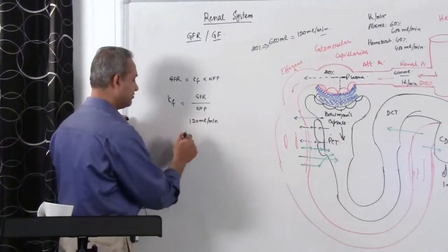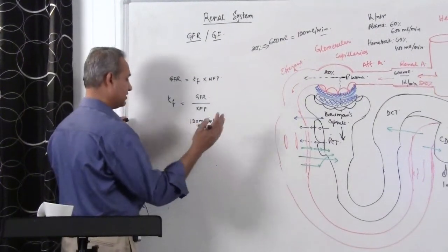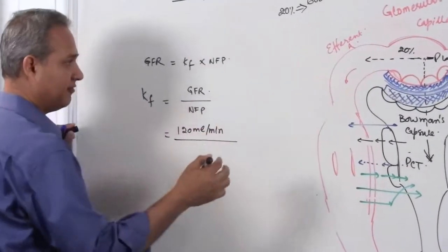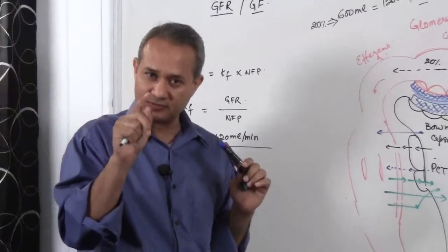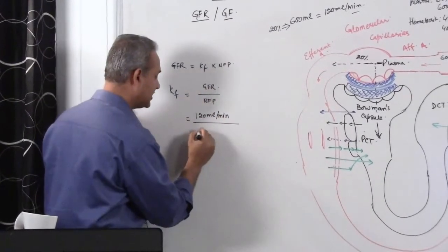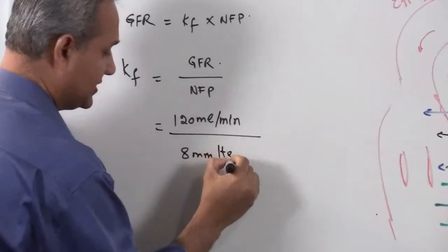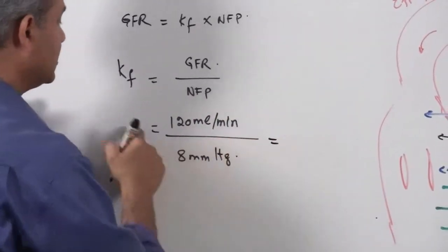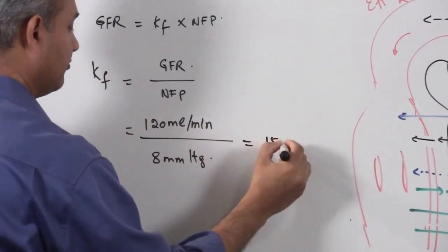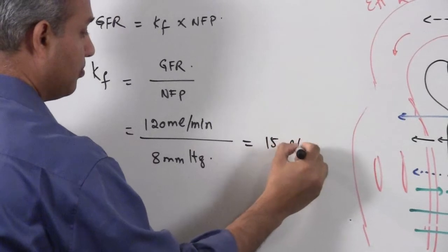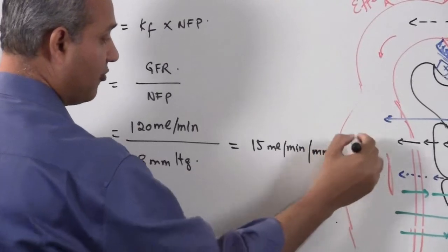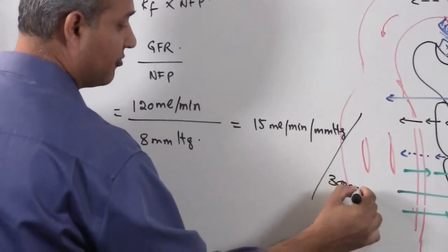The standard GFR in healthy people is 120 milliliters per minute. The net filtration pressure is 8 millimeters of mercury. So the filtration coefficient works out to 15 milliliters per minute per millimeter of mercury for 300 grams of renal substance.